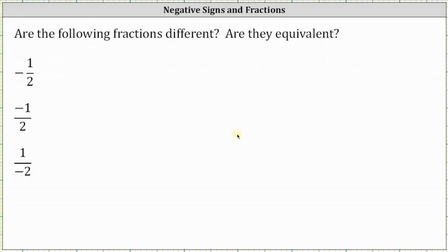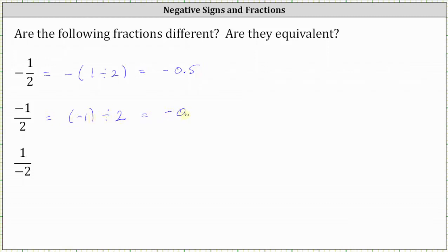We can also think of a negative sign as the opposite. So negative 1 half can be thought of as the opposite of positive 1 half, or the opposite of positive 1 divided by positive 2, which we know as a decimal is equal to negative 0.5. The second fraction, negative 1 over positive 2, is equal to negative 1 divided by positive 2, which is equal to negative 0.5.